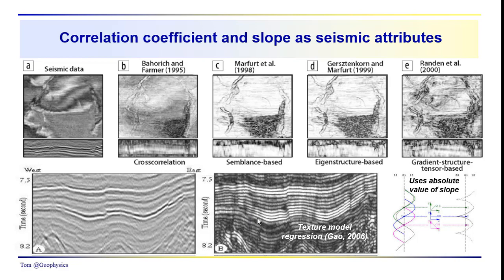Down here we have an approach proposed by Gal in 2006. Here we have the input seismic — you can see some faults, some structure, some stratigraphic variability. Gal uses the absolute value of the slope of the regression line correlation between a sine wave and the seismic data, sample by sample, just rolling that sine wave down through the data and calculating the slope sample by sample.